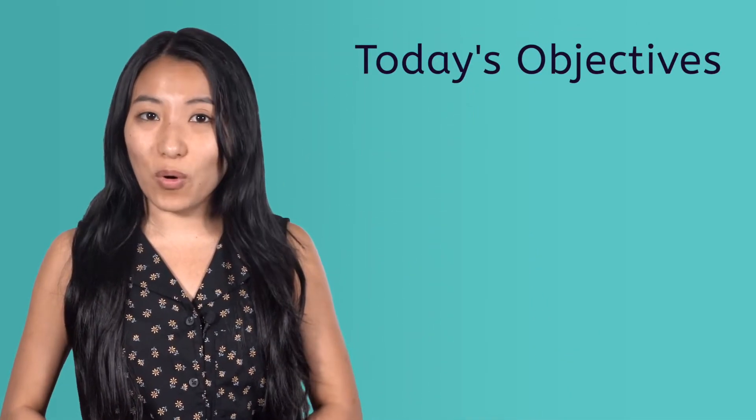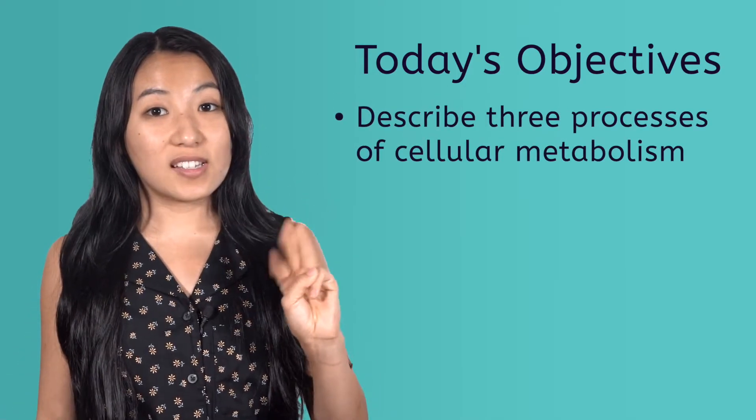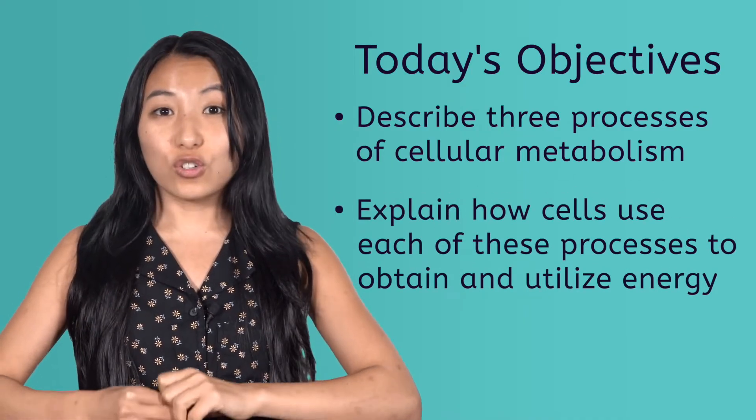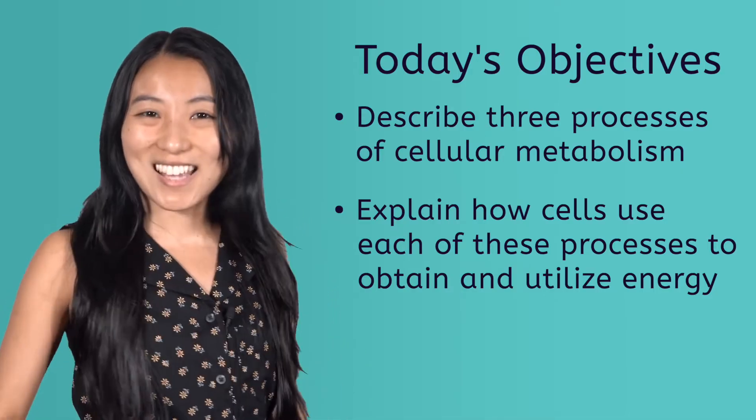Every living thing needs energy to survive and flourish, from microscopic bacteria thriving in underwater volcanoes to majestic eagles soaring through the stratosphere. So where do living things get all this energy from, and more importantly, how is this energy captured and used in a reliable way? In today's lesson, we'll explore this and more as we describe three processes of cellular metabolism and explain how cells use each of these processes to obtain and utilize energy.